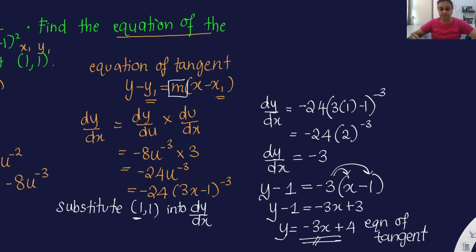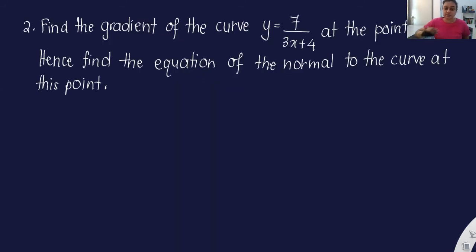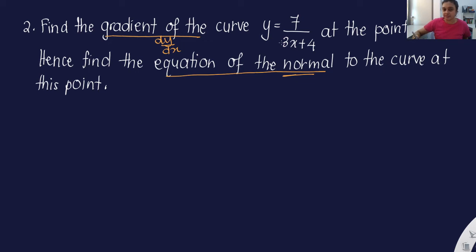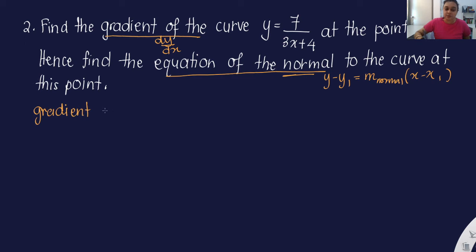Now I'll give you another example — this time finding the equation of normal. Let's look at the second question. Find the gradient of the curve at the given point. First we need to find dy/dx. Then find the equation of the normal to the curve at the same point. So we need two things: the gradient of the curve (dy/dx), and then the gradient of normal to form the equation of normal.